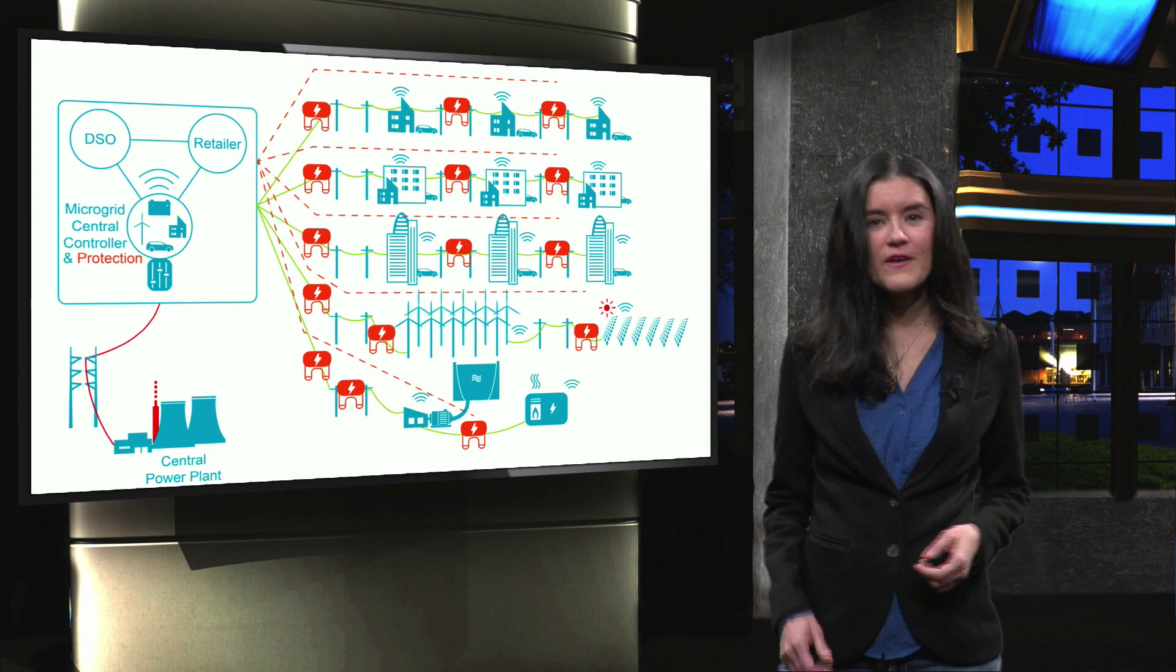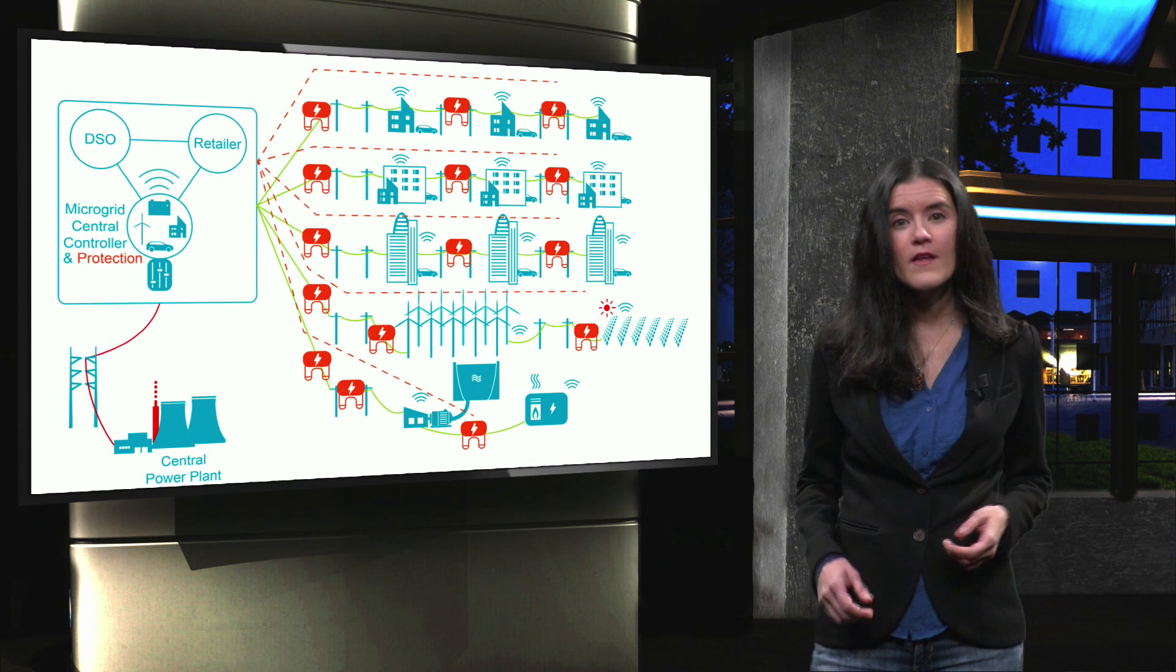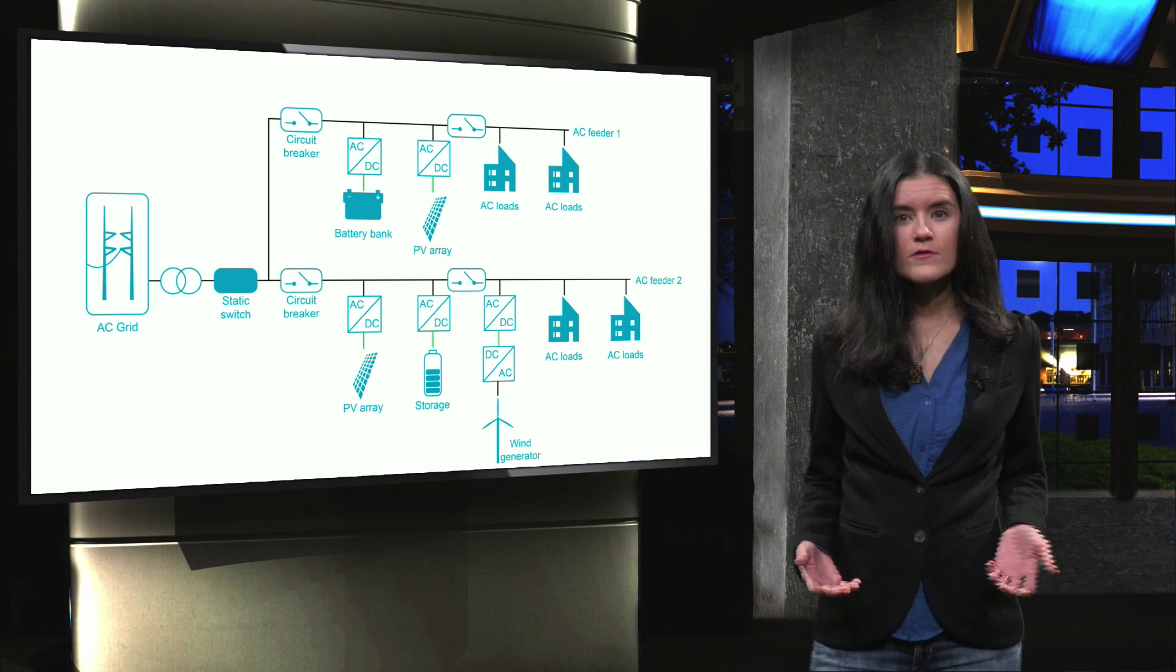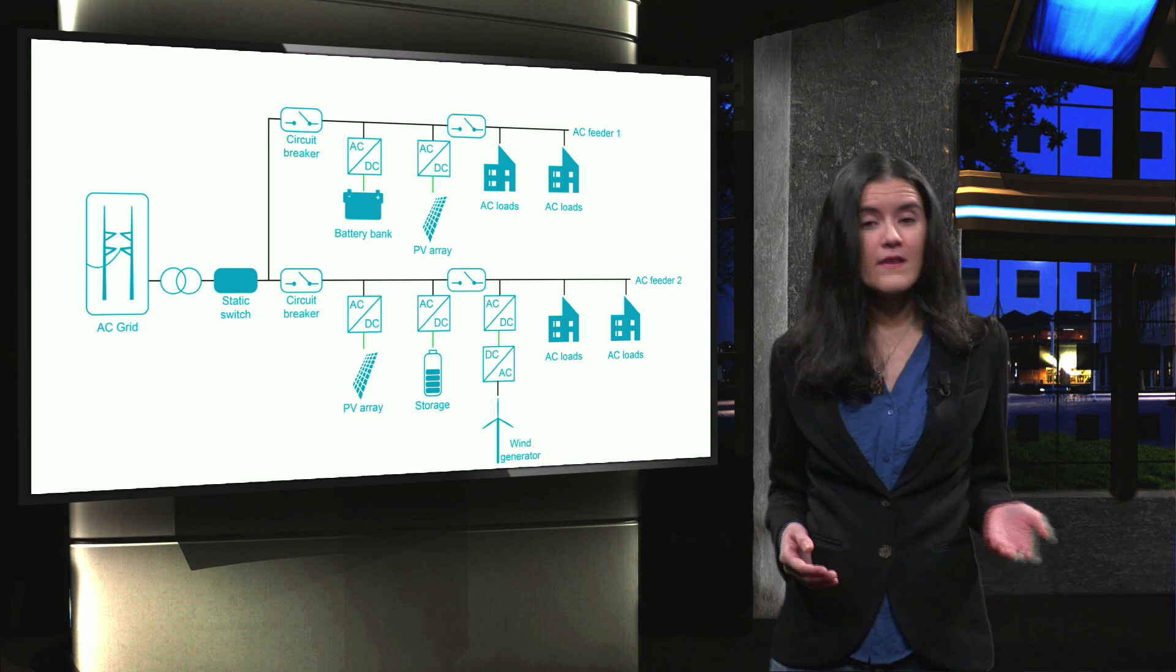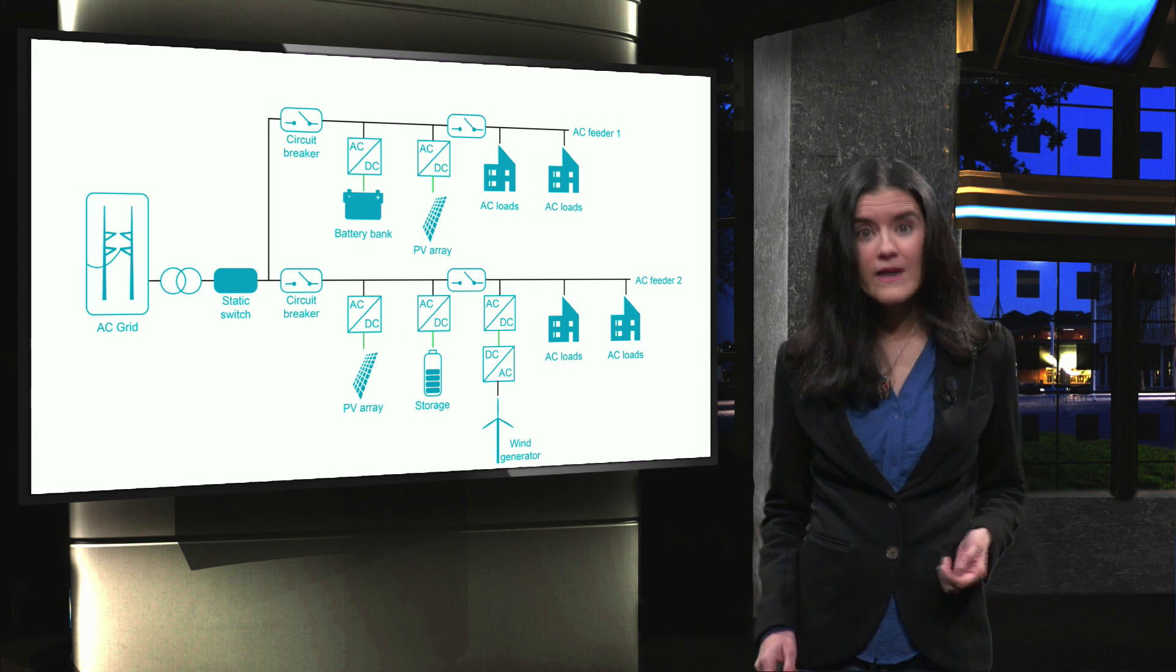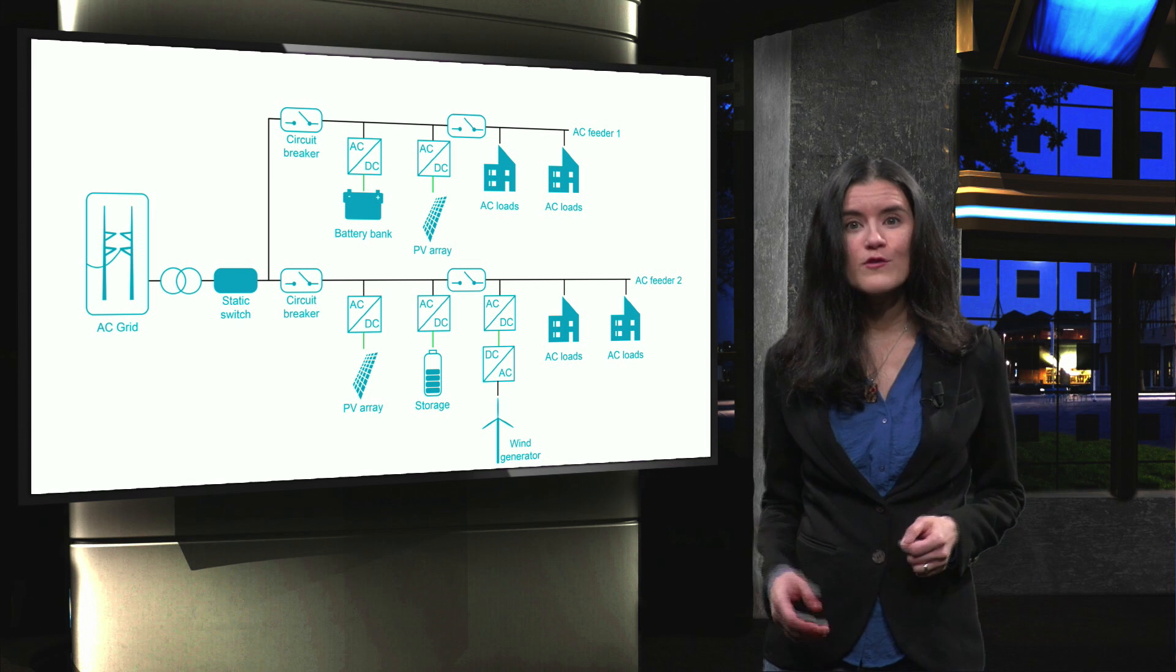A fault is in fact defined as an abnormal current level in an electric network. Microgrids need to be properly protected during faults, which can occur either at the external grid or inside the microgrid. Network current can rise due to short circuits in the system. We will learn about different types of faults in the next videos.